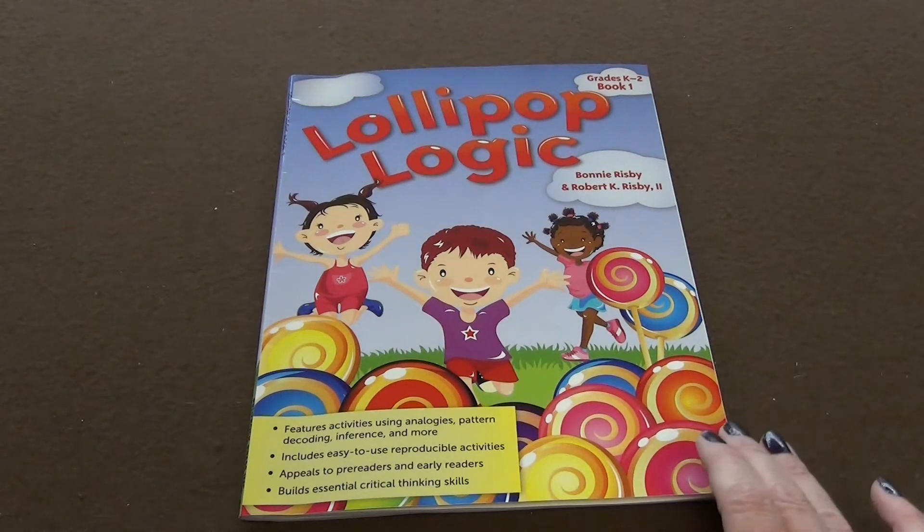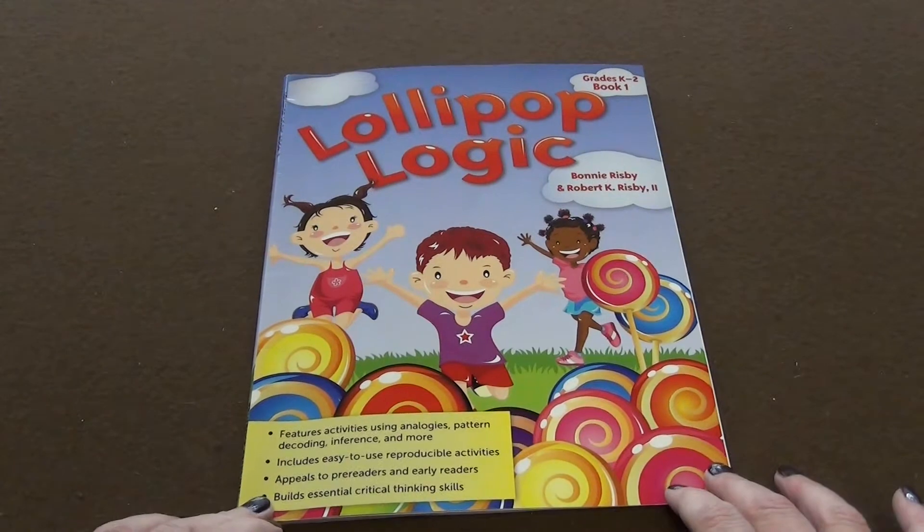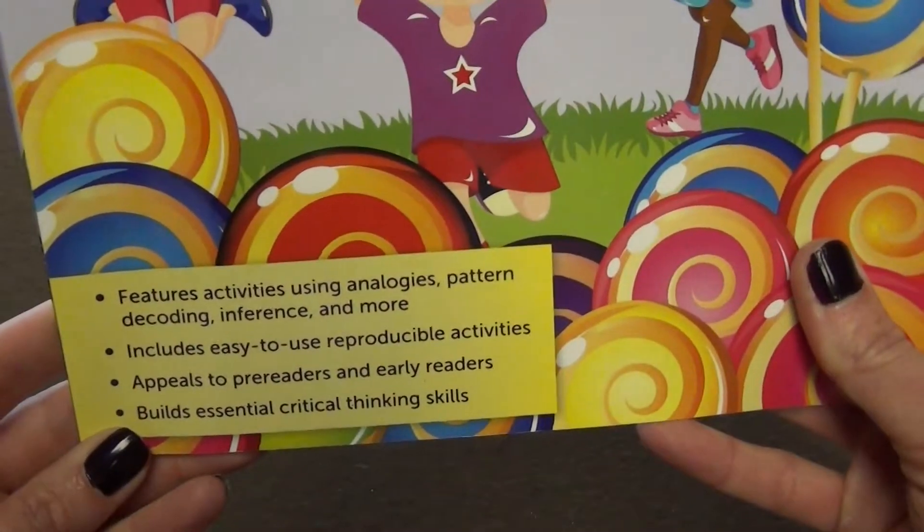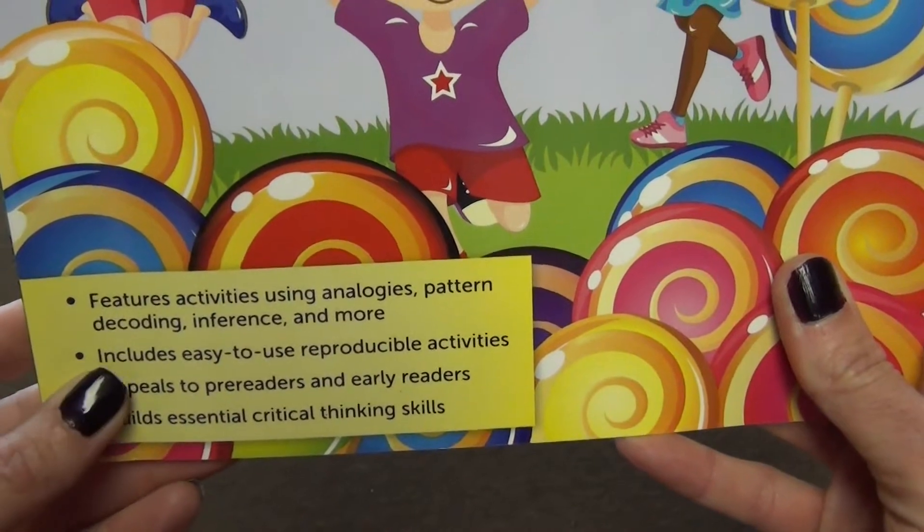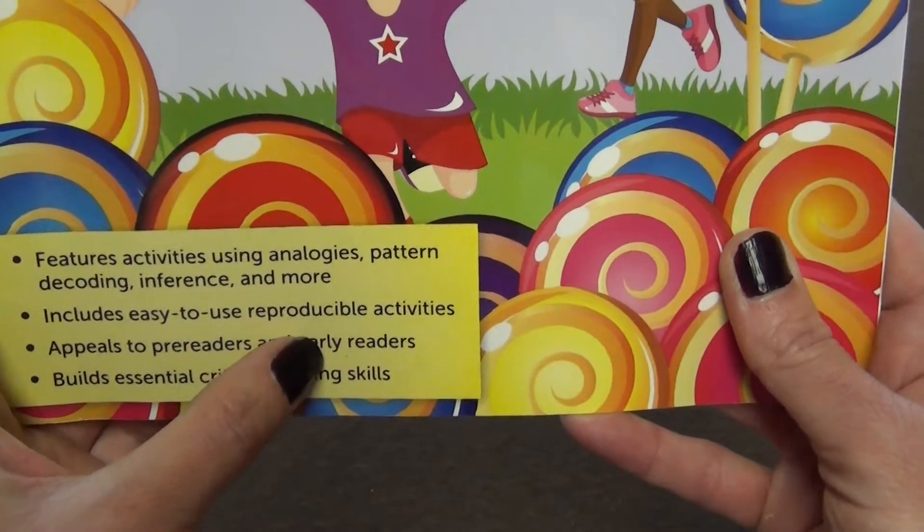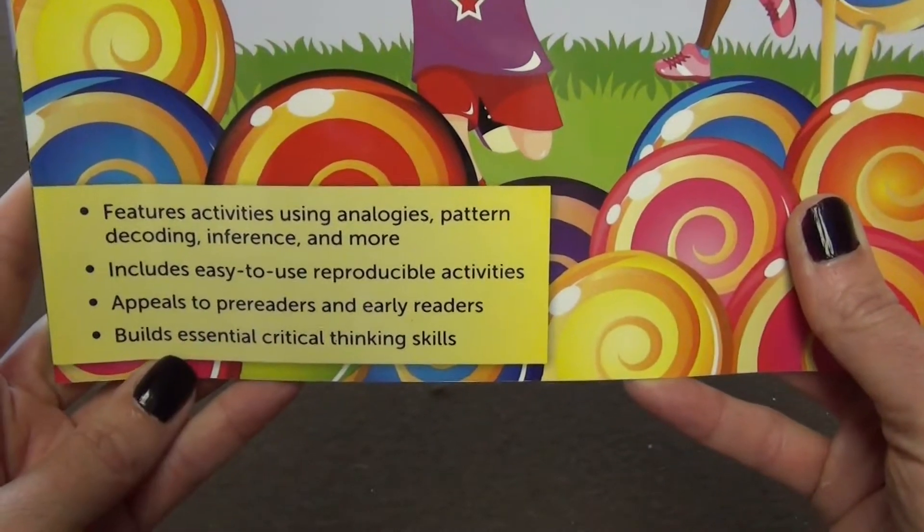This is a really good book for early critical thinking skills. It says that it's for grades K through 2 and that this is book 1. It features activities using analogies, pattern decoding, inference, and more. And it has easy to use reproducible activities and it appeals to pre-readers and early readers.